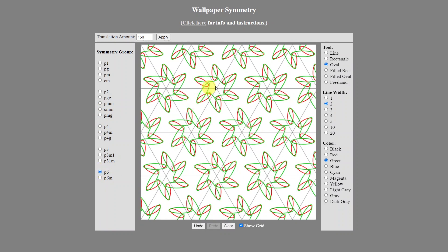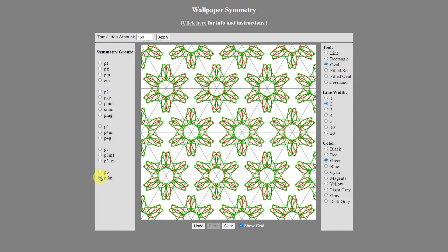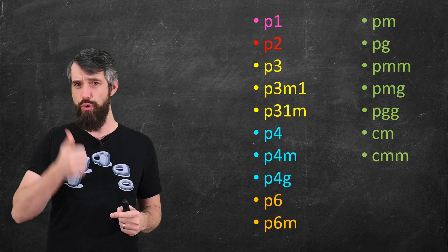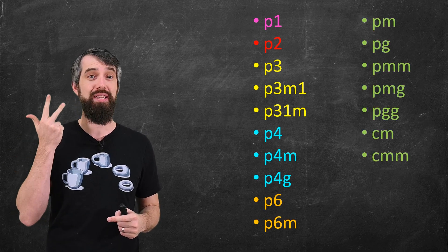So for example, this one is the P6 that we've seen earlier. If I do P6M, it's going to get a lot more complicated because it has all the things from P6, but it also has a mirror in it. Now you might have noticed that we had rotations of order 2, 3, 4, and 6, but nothing else. Why was there no P5, no P7?